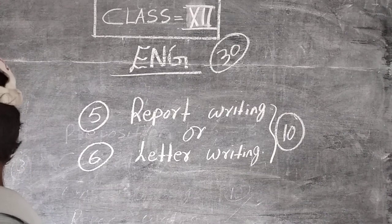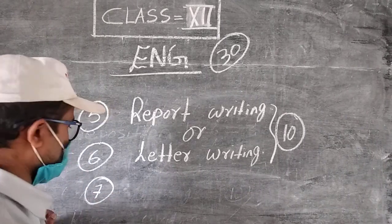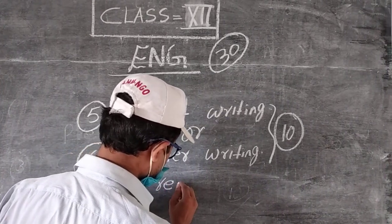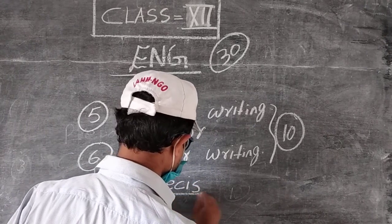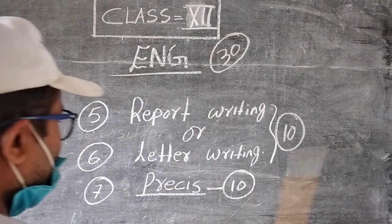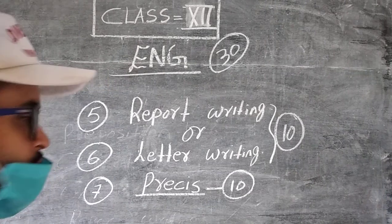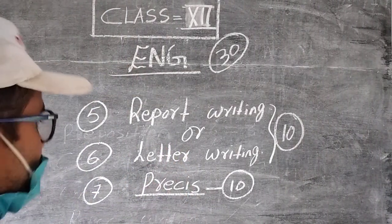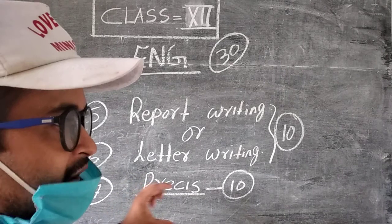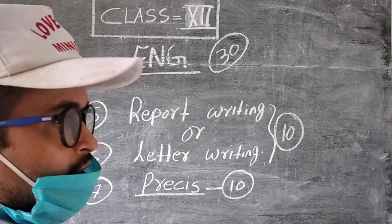Number seven, the last one will be precise writing. In this precise writing they will give you, let's say, 200 words or 250 words of passage. They will provide you a passage and you have to read that passage and make it precise. Precise means you have to note down the main point and avoid the useless point.